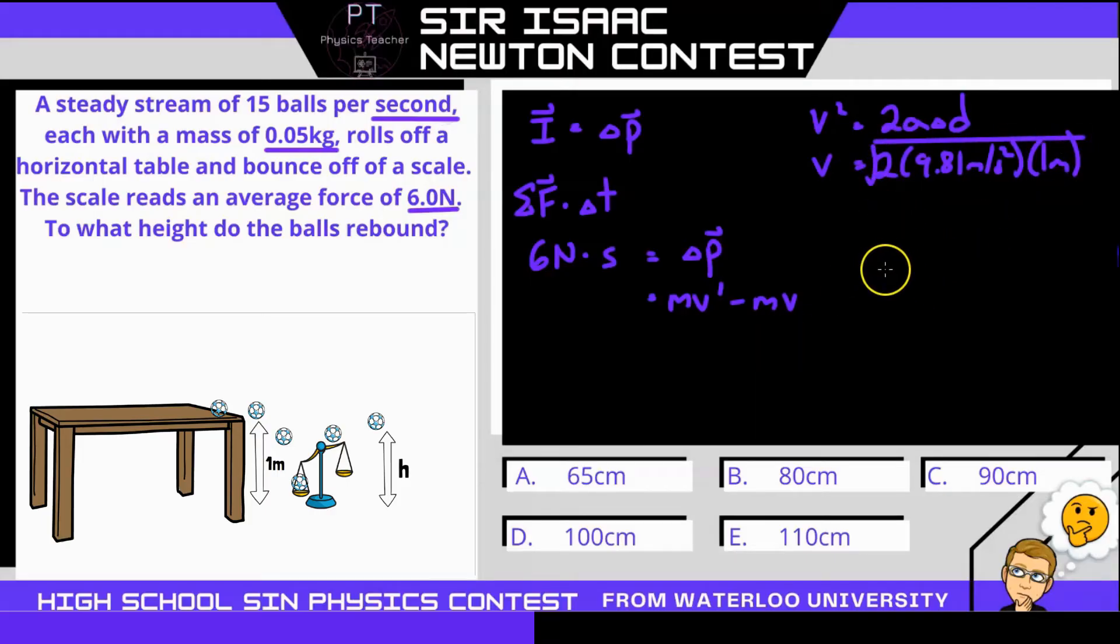Now, our final velocity, or v prime, is going to be the velocity right after it leaves the scale, which then we can use the same kinematic equation of motion, as it then rises under gravity to reach a maximum height of h. So we would say v prime squared is the same thing, 2a delta d. But in this case, we'll have 2 times 9.81 meters per second squared times some height h. So v prime is going to be the square root of this.